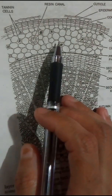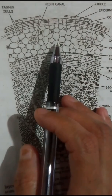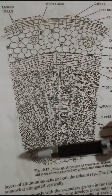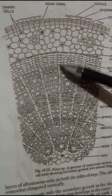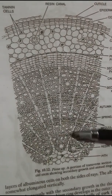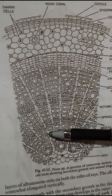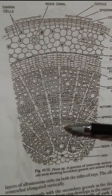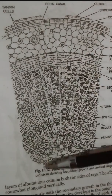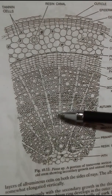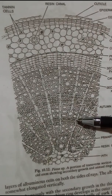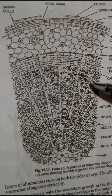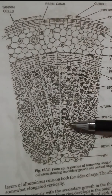Continuing with secondary growth in the stem of Pinus — in the long shoot. As explained in the previous video about spring wood and autumn wood formation, today we will talk particularly about medullary rays. As you can see in the diagram, many medullary rays run through the secondary phloem and secondary xylem. There are two types of medullary rays: primary and secondary.